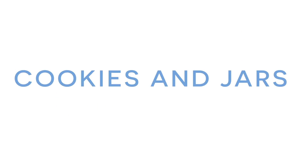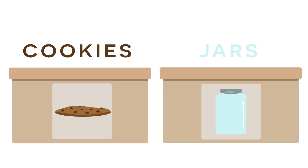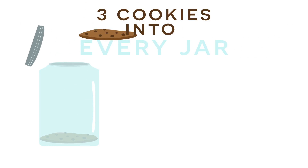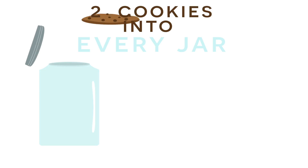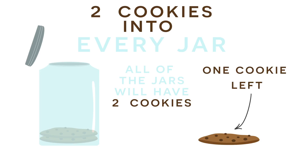Here we have another fun algebra word problem. In this problem, we have a bunch of cookies and a bunch of jars, and we're trying to find out exactly how many cookies we have and how many jars we have. What we do know is that if we put three cookies into every jar, we're going to have one jar that's completely empty left over. Also, if we put two cookies into every jar, then all of the jars will have two cookies in them, and there'll be one cookie left over.